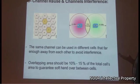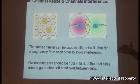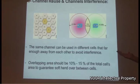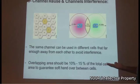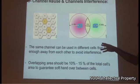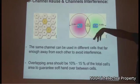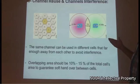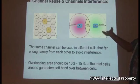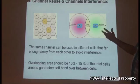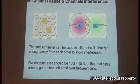Channel reuse and channel interference: when covering a large area with Wi-Fi, channels will be reused across different cells. The same channel can be reused in different cells that are far enough apart to avoid interference. Between adjacent cells using different channels, proper spacing must be maintained.